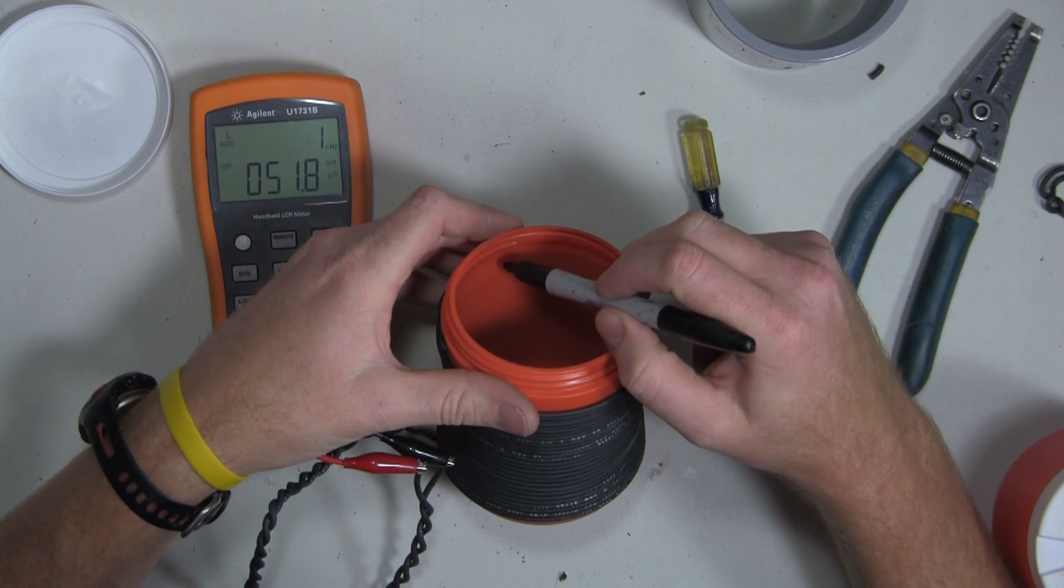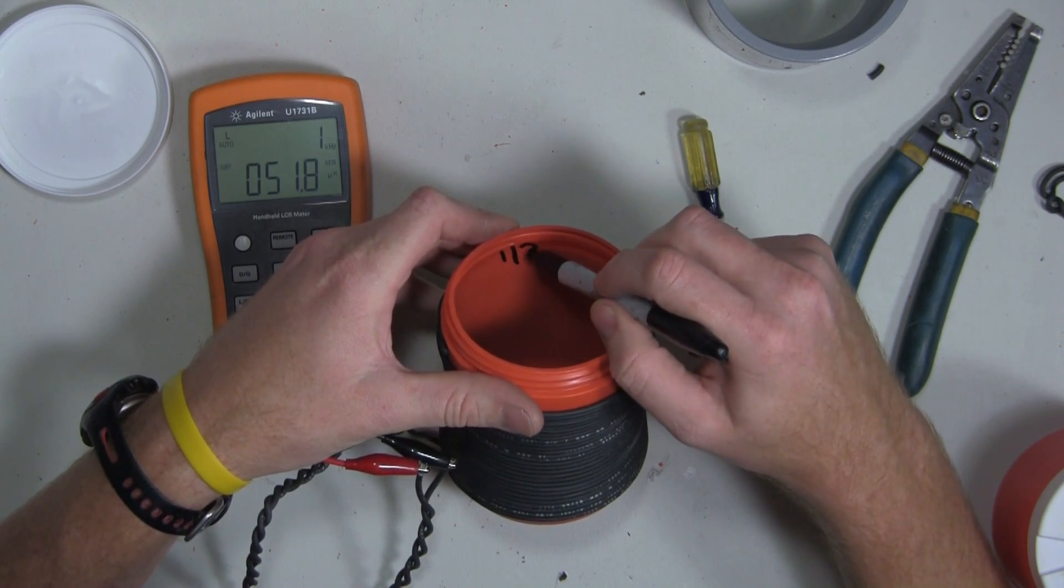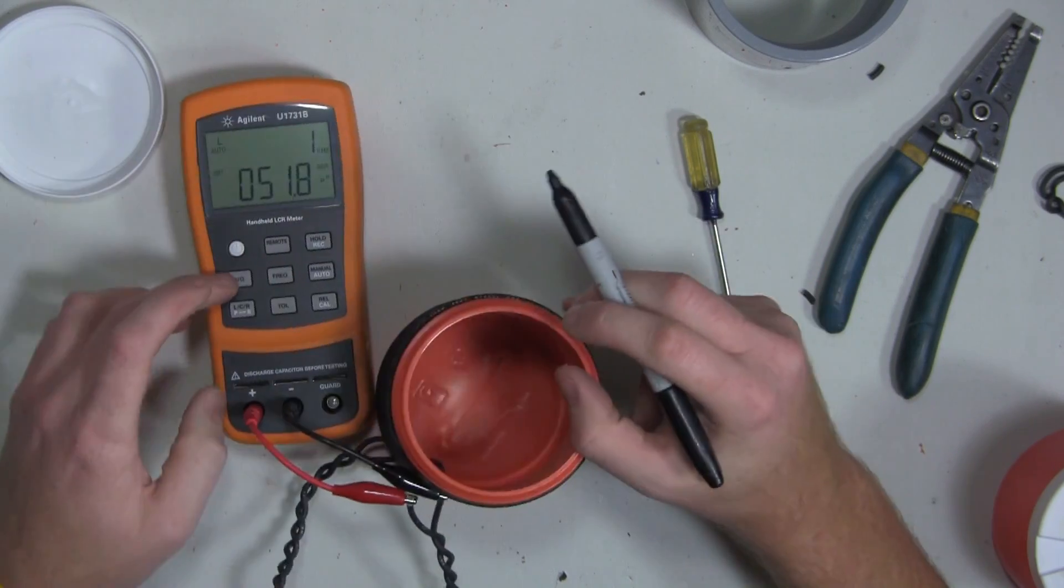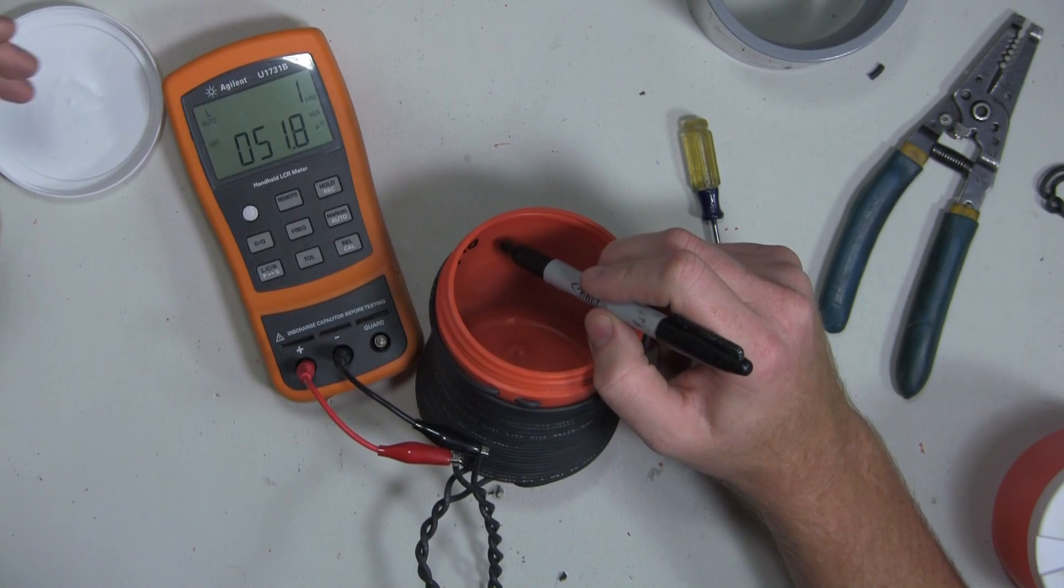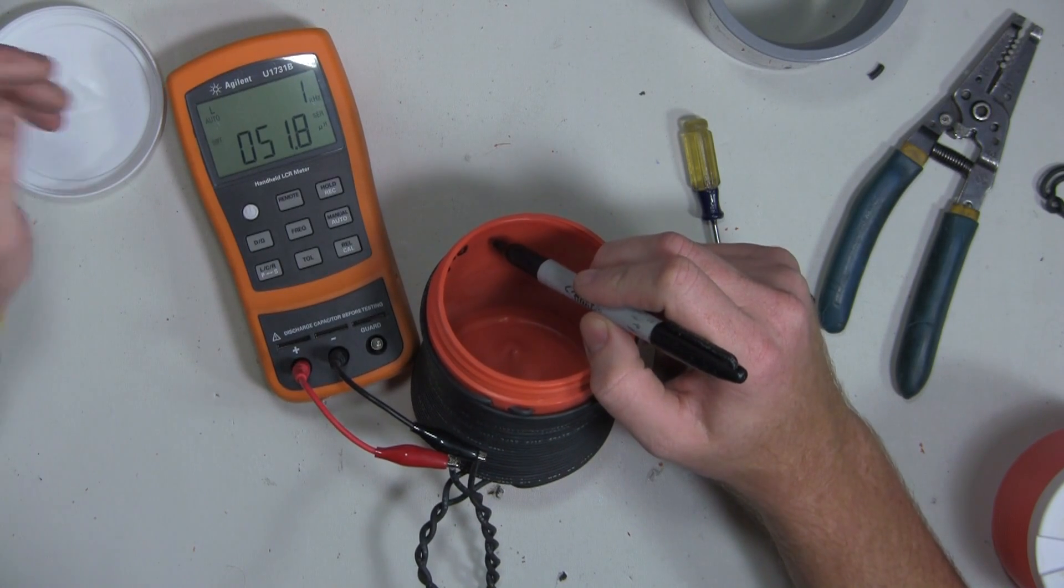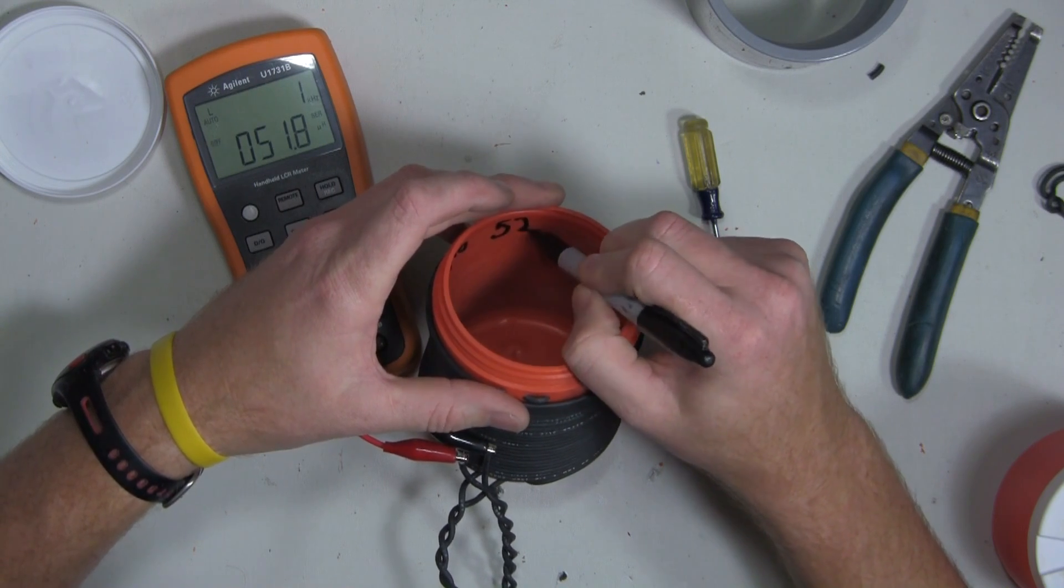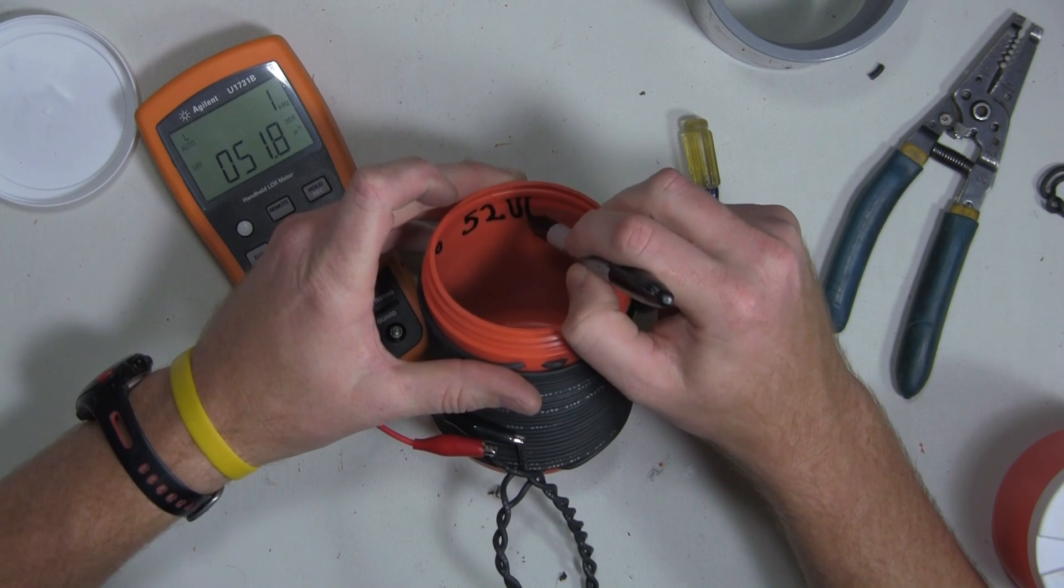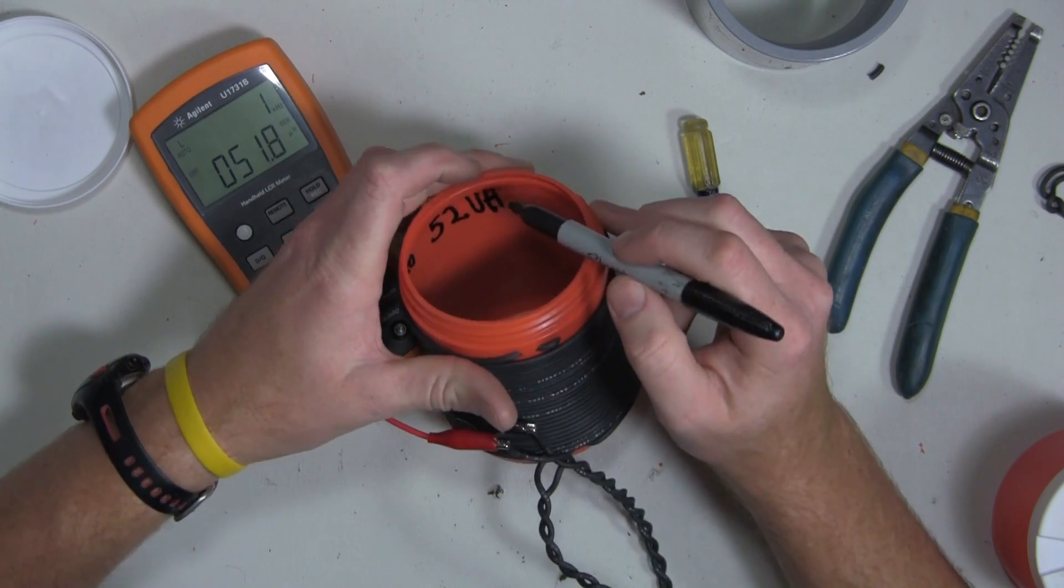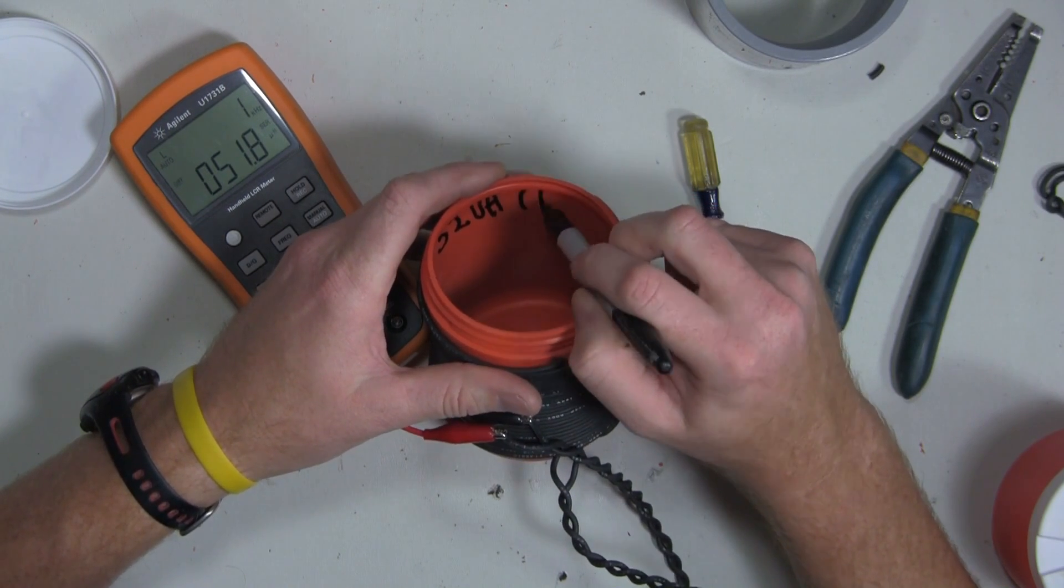And I'm going to write the date, which I believe today is probably around the 20th. And then I'm going to write what the reading was, which is, now that it's got a stable reading, I'm going to go ahead and stick with 52 micro-Farads, or excuse me, micro-Henrys. And then I am going to write the frequency that it was tested at.